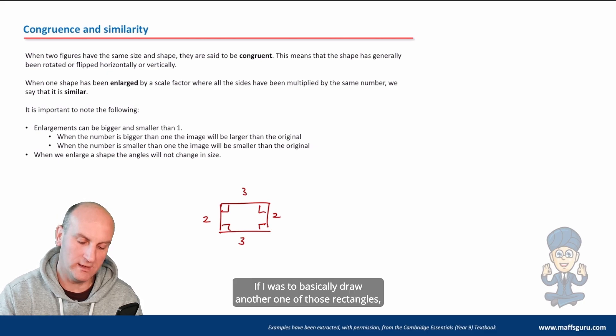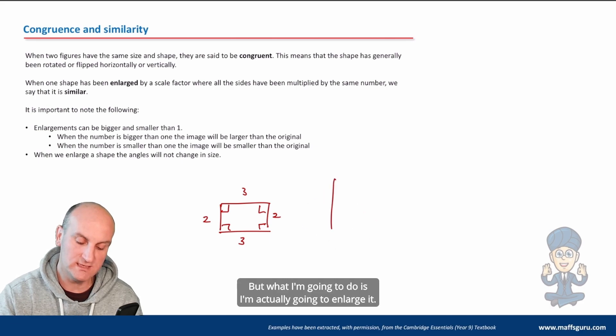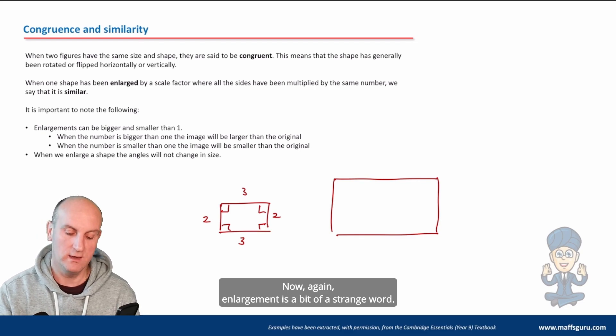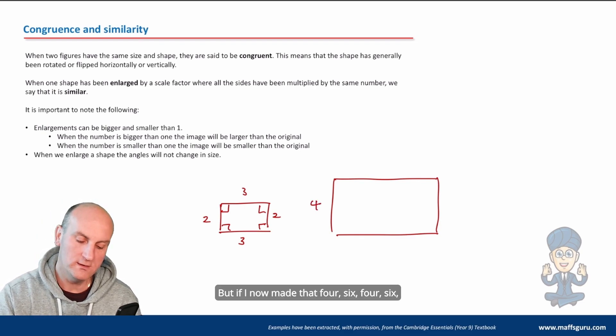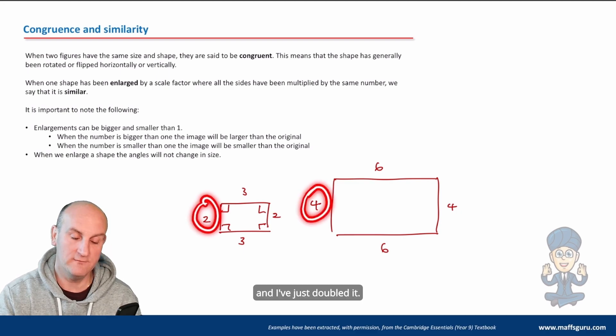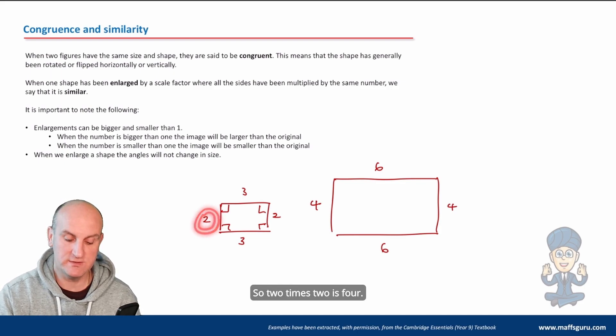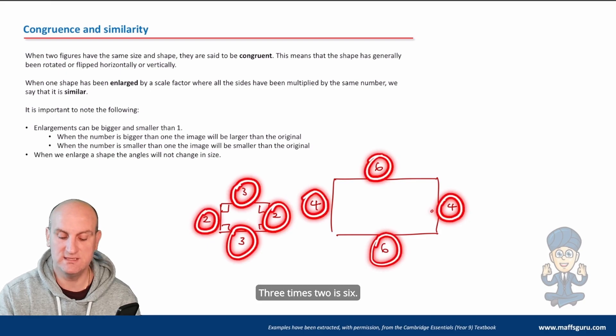If I was to draw another one of those rectangles and have it as two, three, two, three, we would say they were congruent. But what I'm going to do is actually enlarge it. Enlargement's a bit of a strange word, but if I now made that four, six, four, six, hopefully you would realize that I've taken each of its sides and just doubled it.